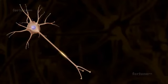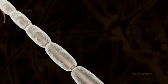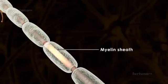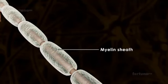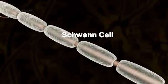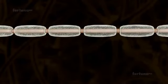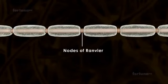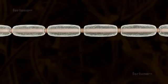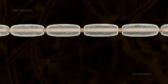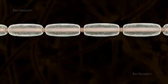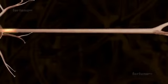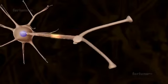Axons may be myelinated or non-myelinated. Myelinated axons are wrapped with the myelin sheath in some parts. The myelin sheath is secreted by the Schwann cell. The myelin wrapping is not continuous — there are gaps in between. The gap in the myelin sheath is called the nodes of Ranvier. Non-myelinated axons lack the myelin sheath. In the transmission of impulses, the impulses simply cascade along the non-myelinated axon, while the impulses jump from one node to the next along a myelinated axon.